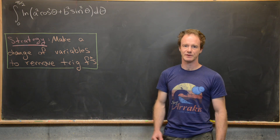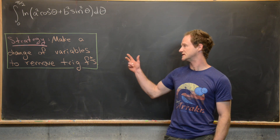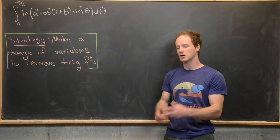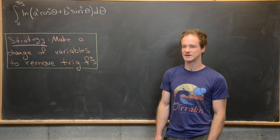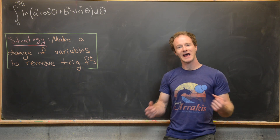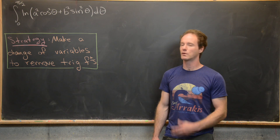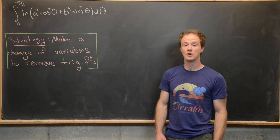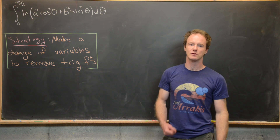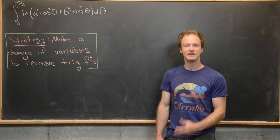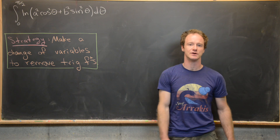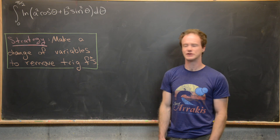A common strategy when attacking these types of integrals is to make a change of variables that will remove the trig functions. There are two common changes of variables: we could either let x equal sine theta, making theta equal to arcsin of x, or we could let x equal tangent theta, making theta equal to arctan x. In this case we're going to use that tangent substitution, because we have a sine and a cosine, and that'll be most useful.